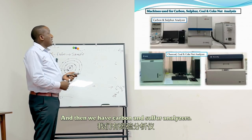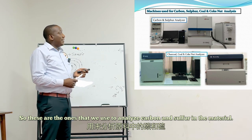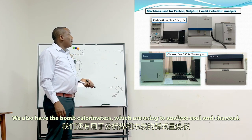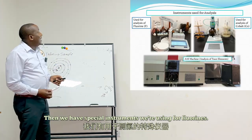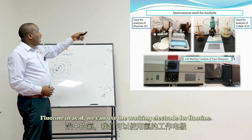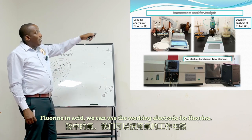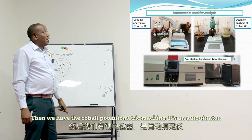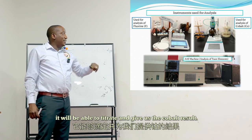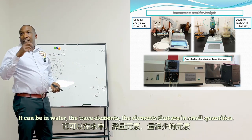We also have carbon and sulfur analyzers for analyzing carbon and sulfur in materials. We have bomb calorimeters for analyzing coal and charcoal. For fluorine in acid, we use a working electrode. We have the cobalt potentiometric machine — an autotitrator — that can titrate and give us the cobalt result. The AAS machine is used for trace elements such as those present in water in small quantities.